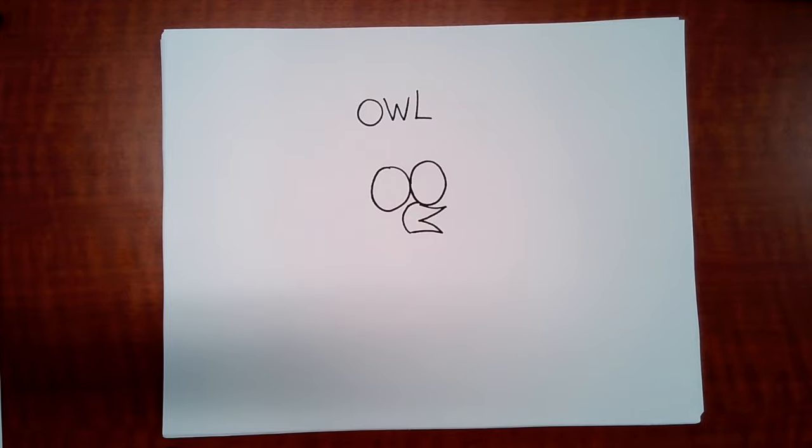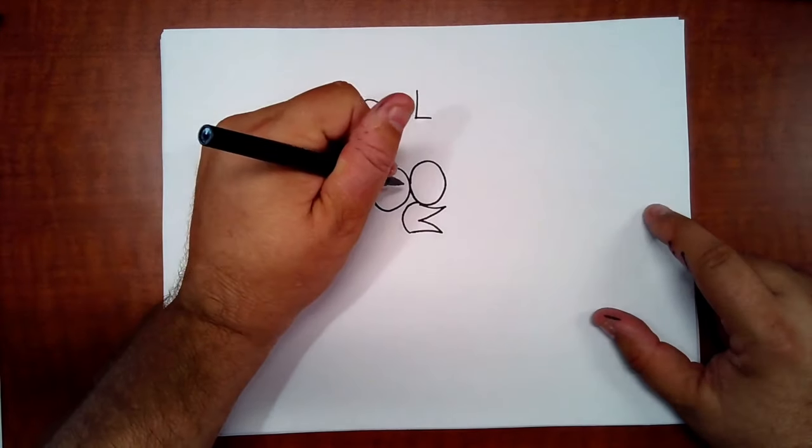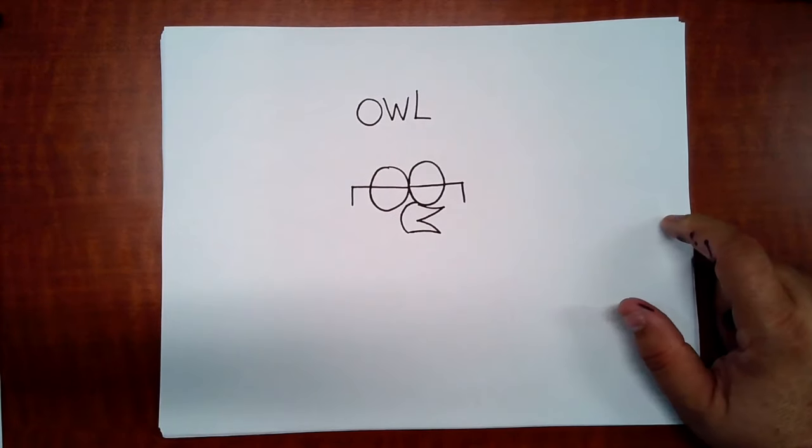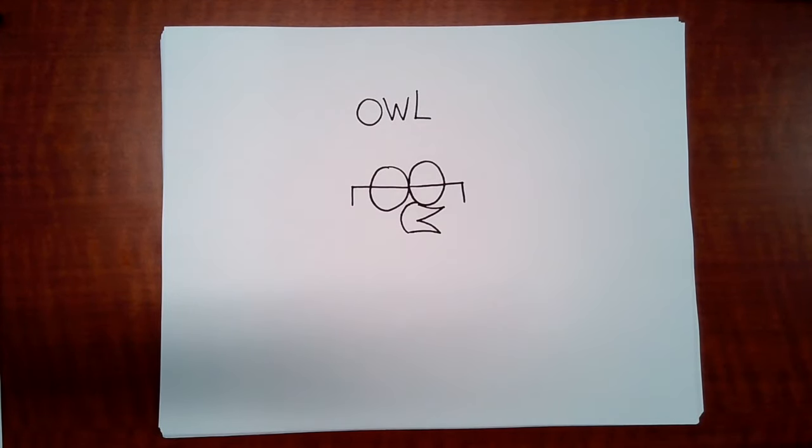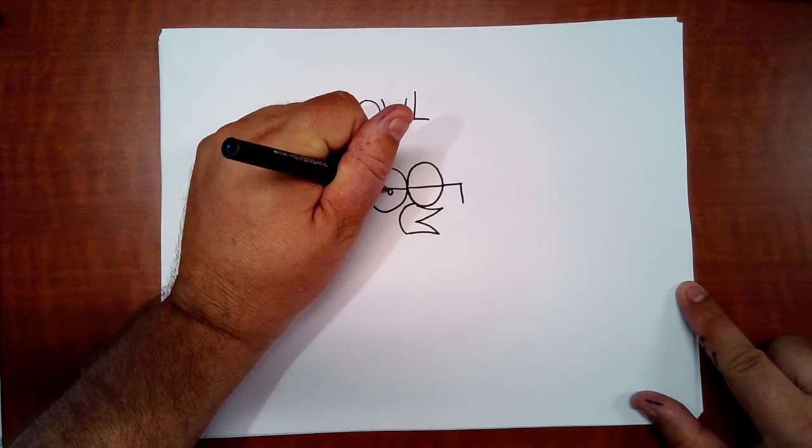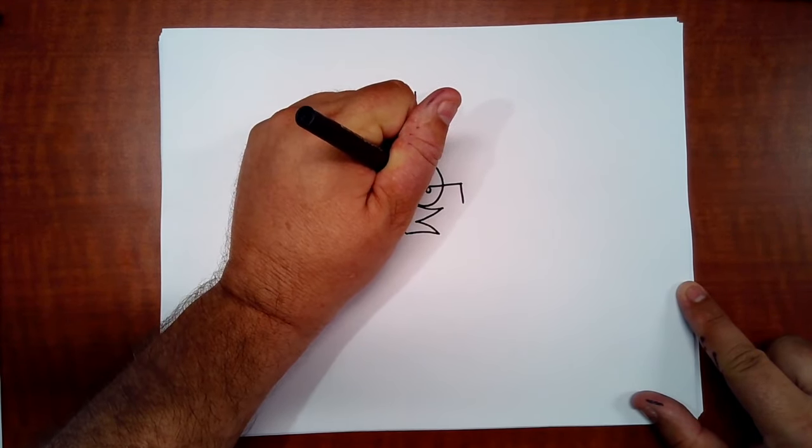So what we're going to do is take the letter L and turn it around on its side like this: L and L, and then add a period here and a period here.